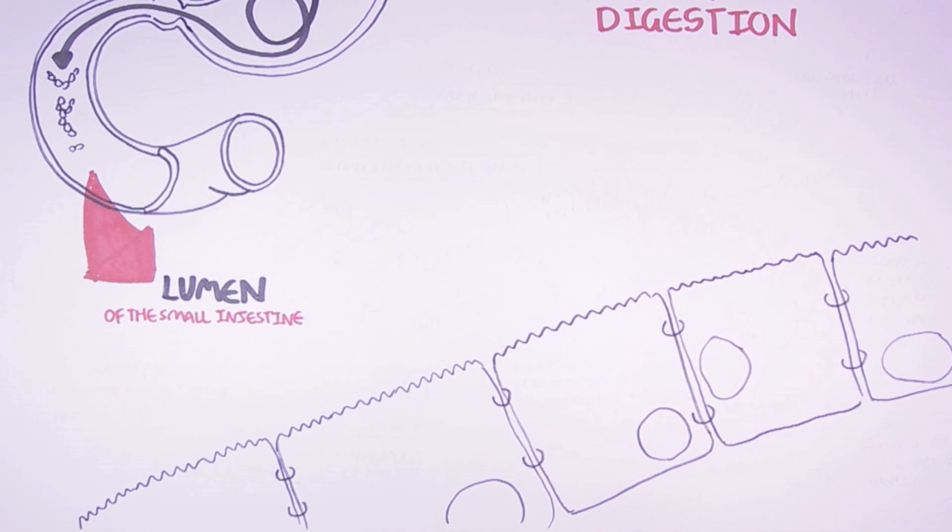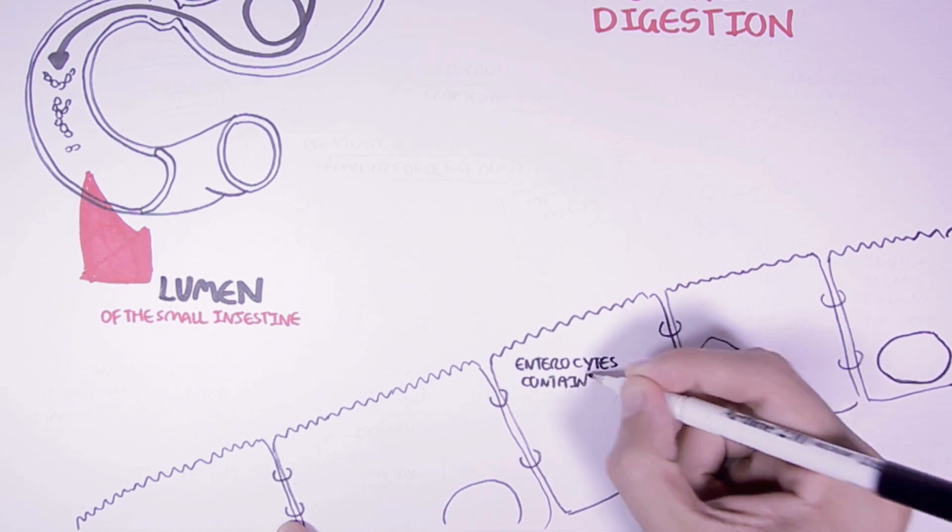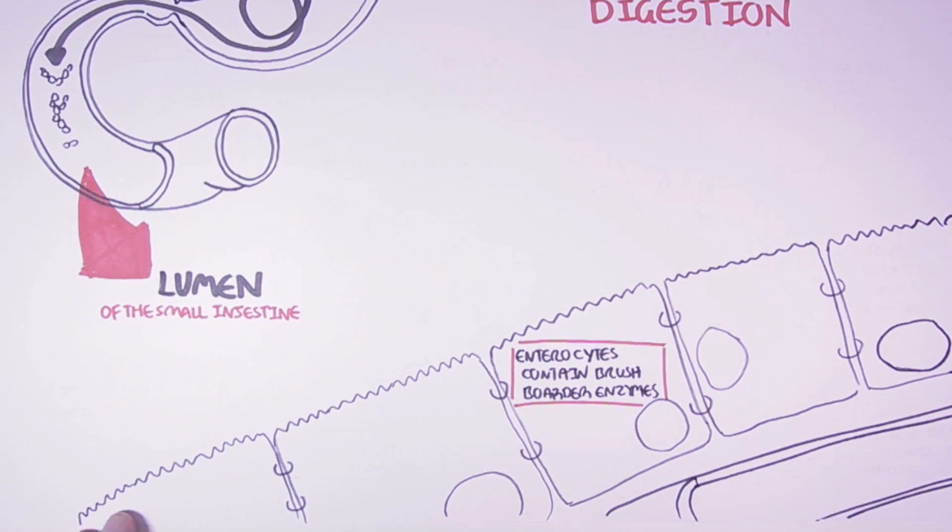The enterocytes are also called the absorptive cells because they absorb the nutrients. But the enterocytes also contain these enzymes called brush border enzymes that play a role in the digestion of starch. Below the enterocytes we have the bloodstream.